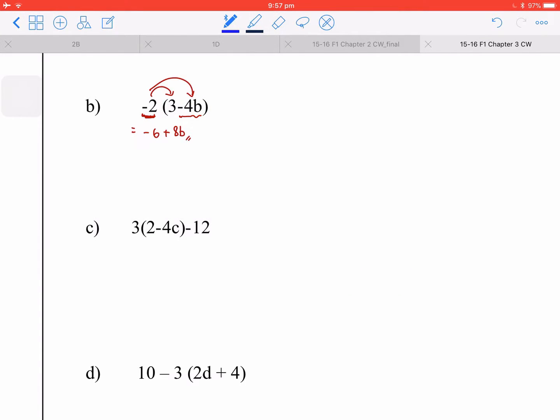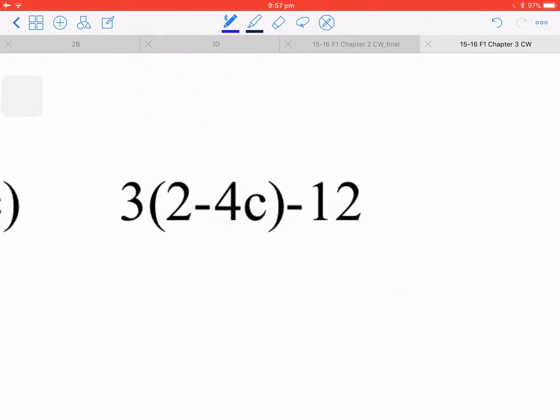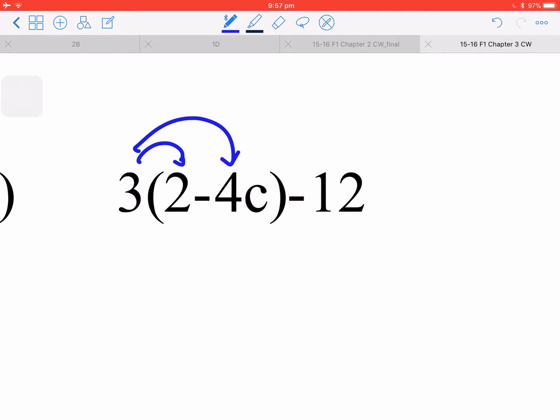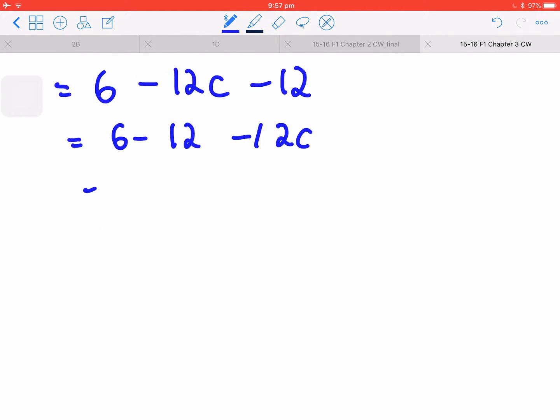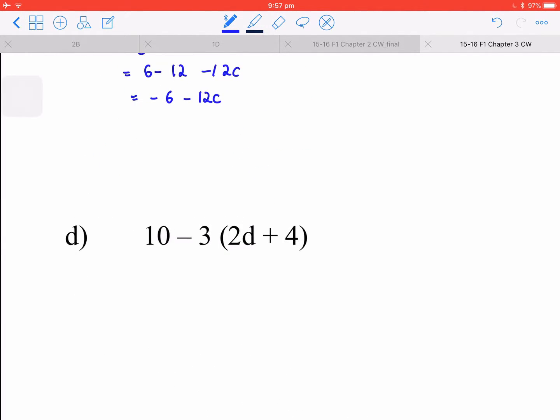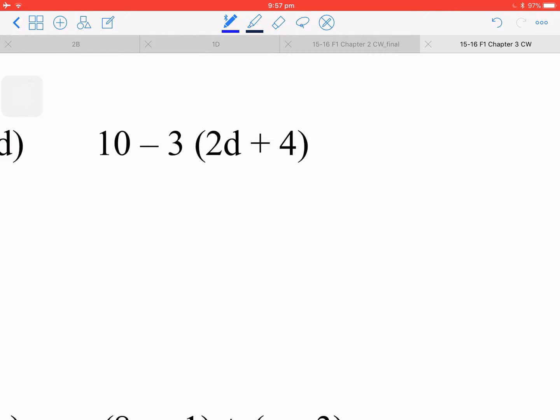For the first one again, you have to expand it. So you have 6 here minus 12c minus 12. You arrange the terms and it becomes 6 minus 12 minus 12c. For the first row, that is negative 6 and minus 12c.